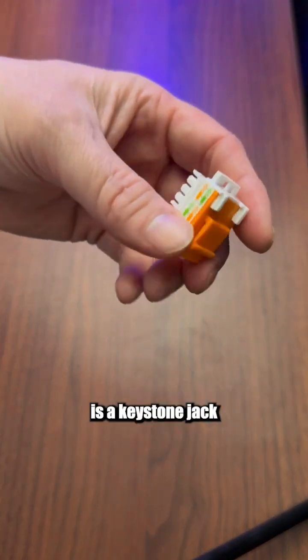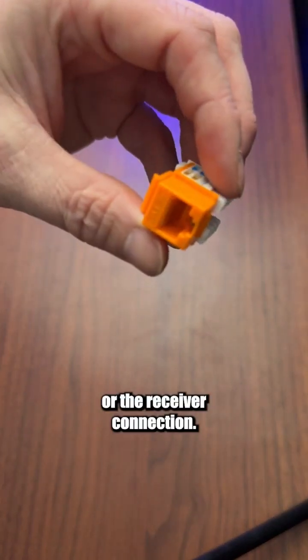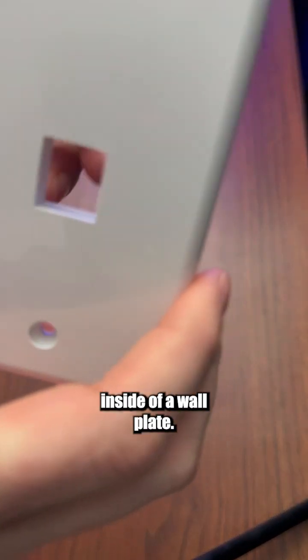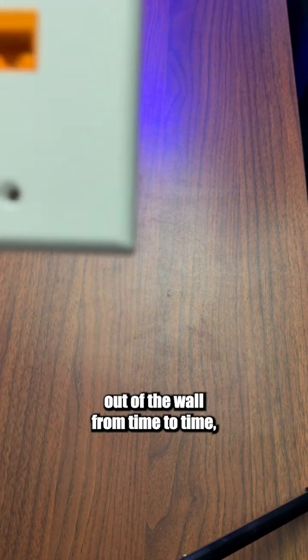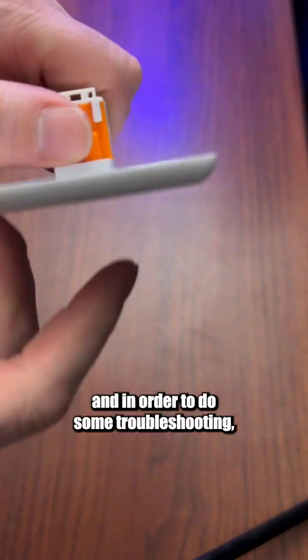The next connection we'll talk about is the keystone jack or the receiver connection. These particular connections you will typically see inside of a wall plate. It's important to know how to set these up as you may have to take these out of a wall from time to time in order to do some troubleshooting.